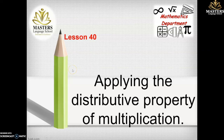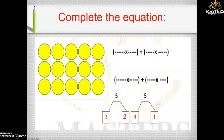Hello everyone. Now we're going to look at applying the distributive property of multiplication. In the first example, we have an array of three rows and five columns. I'm going to take the bigger dimension, which is five, and cut it into two addends that add up to five — so three plus two equals five.